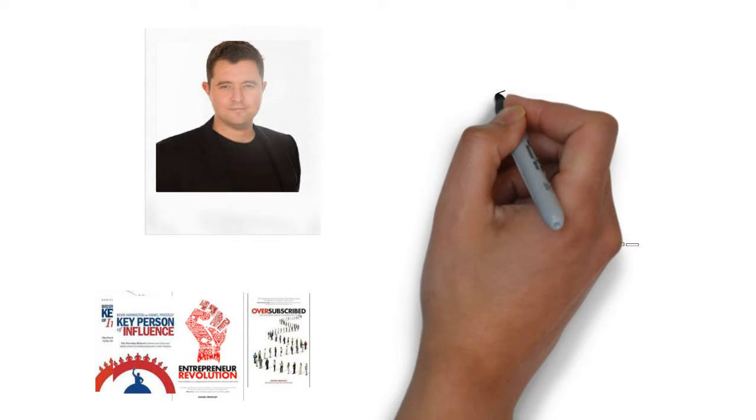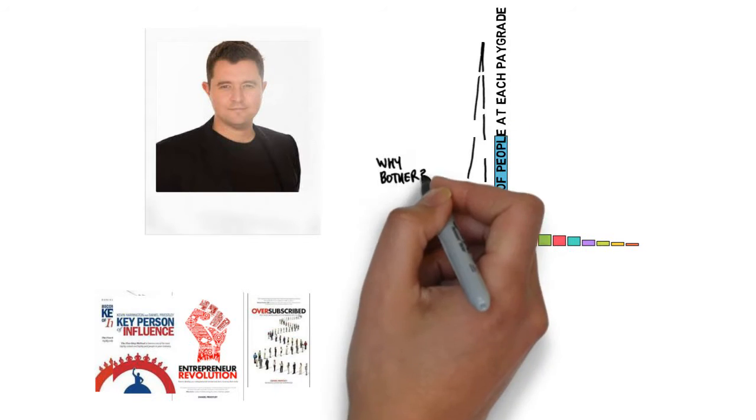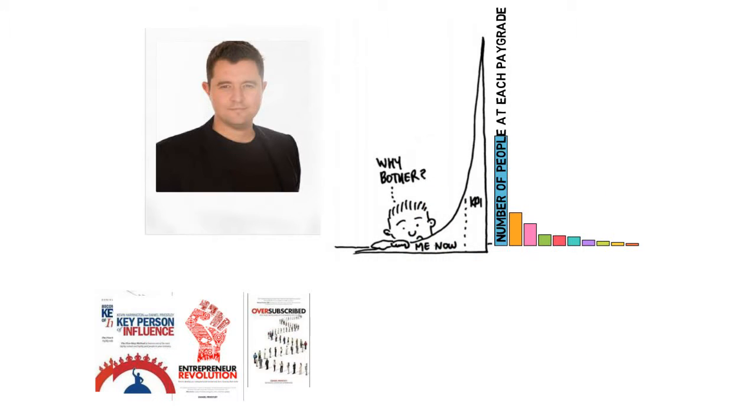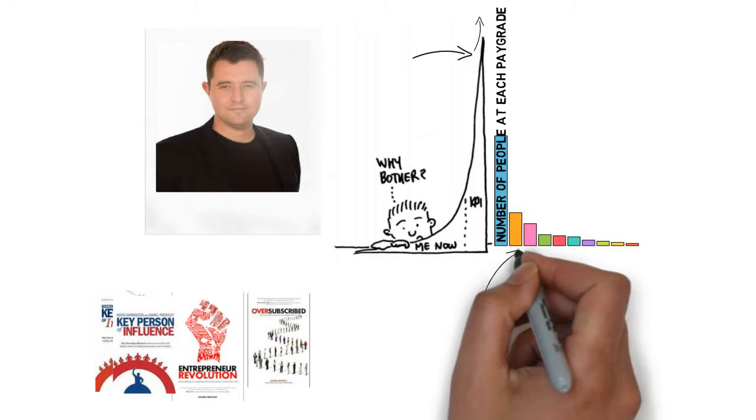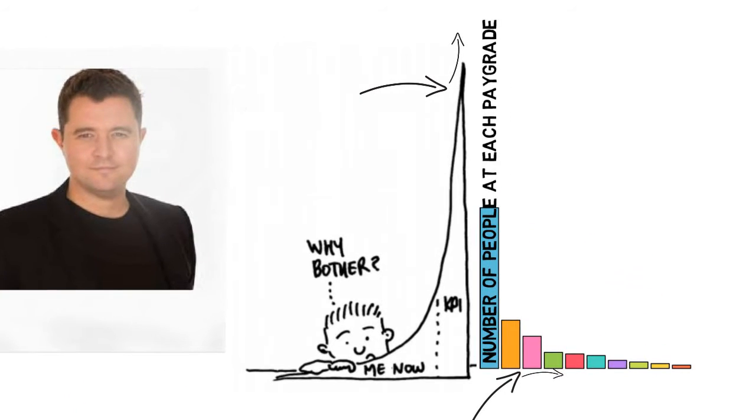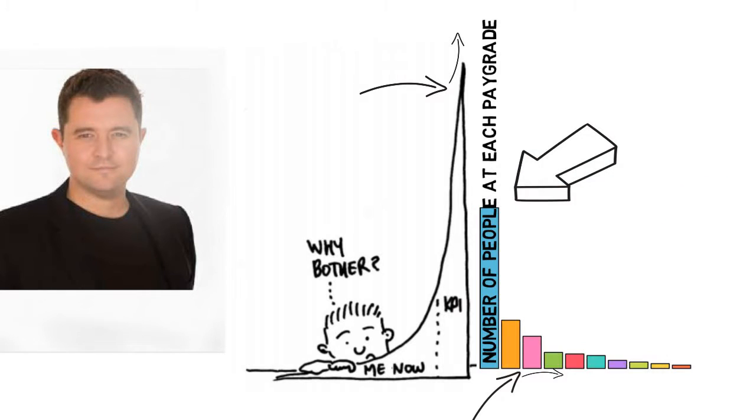He points out that it's a winner-takes-all world. The way in which it is shown is that in every industry there are a few big winners, both in terms of individuals and companies. On the Y axis we can plot income, on the X we have the individuals who receive that income. We could also plot market share on the Y and the organizations or companies with that market share on the X.